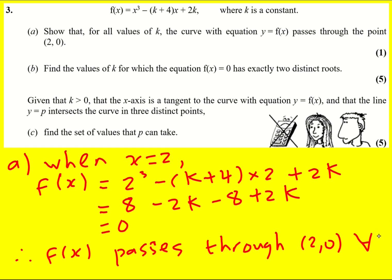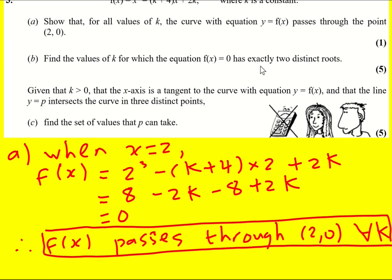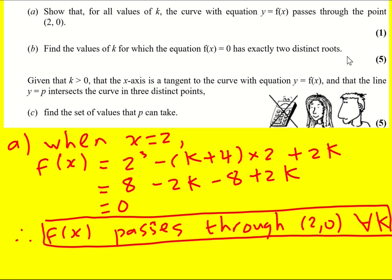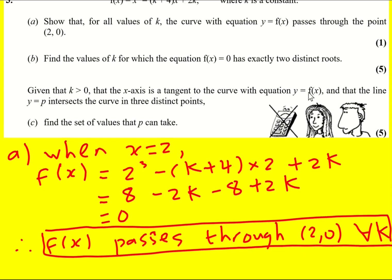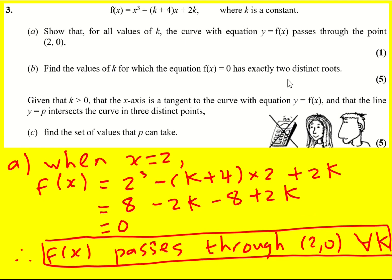And this is a fancy way of writing for all k. Next we're asked to find the values of k for which the equation f(x) equals zero has exactly two distinct roots. So it's a cubic but we're asking for two distinct roots, and that means we need a repeated root essentially.